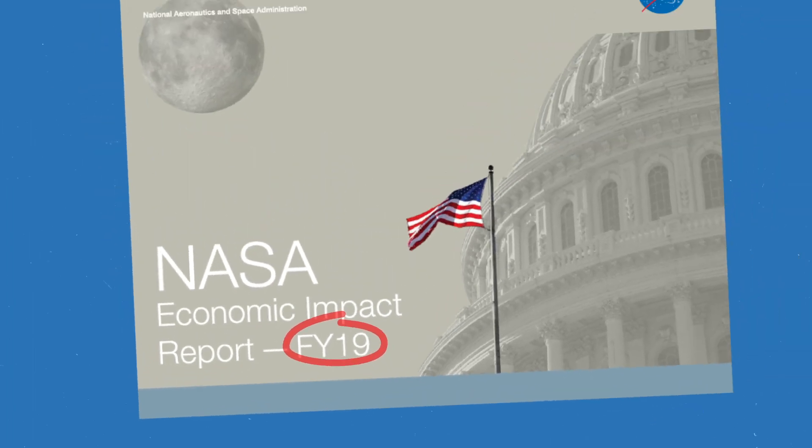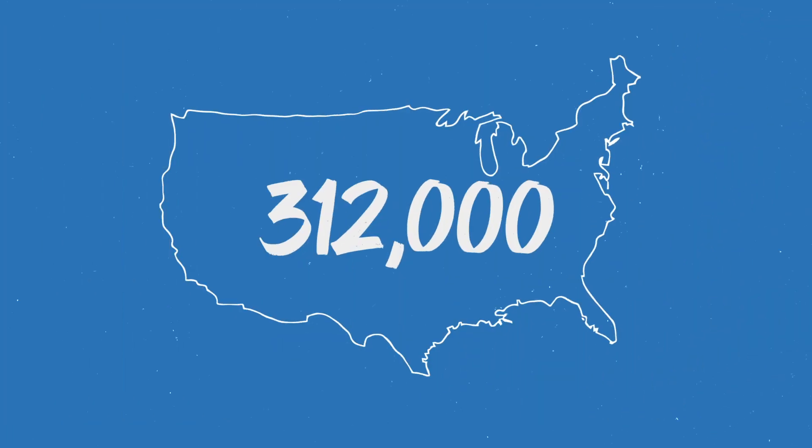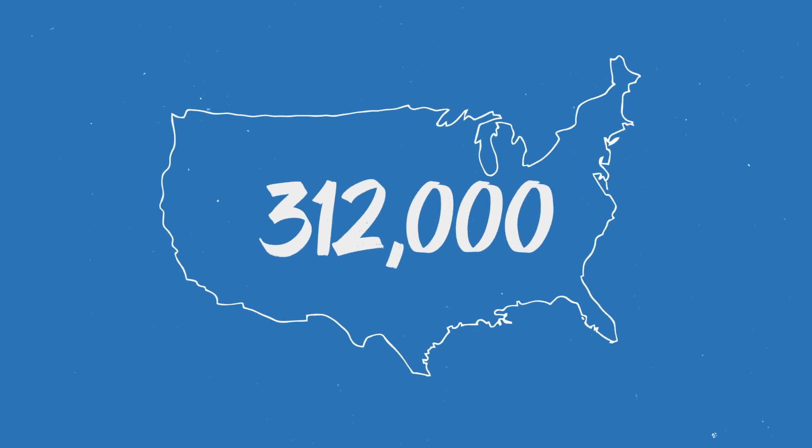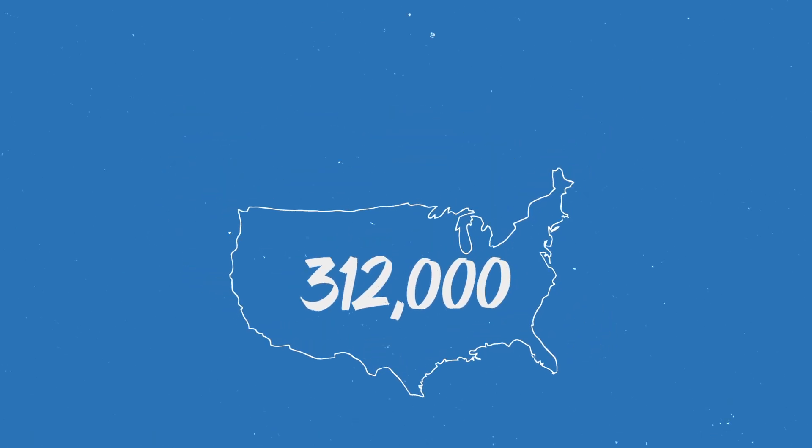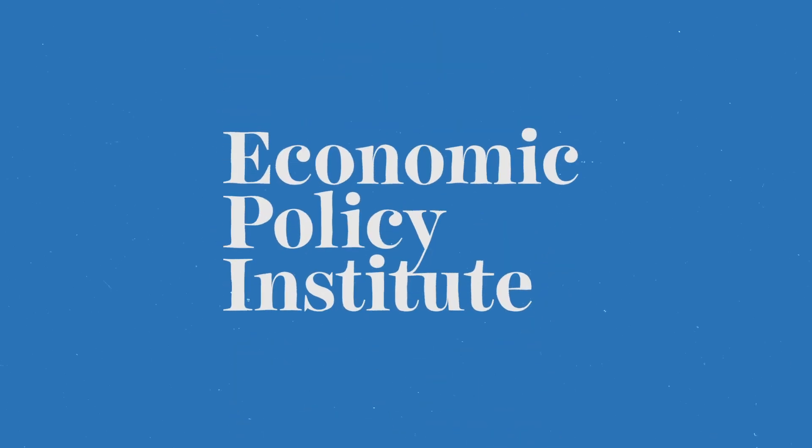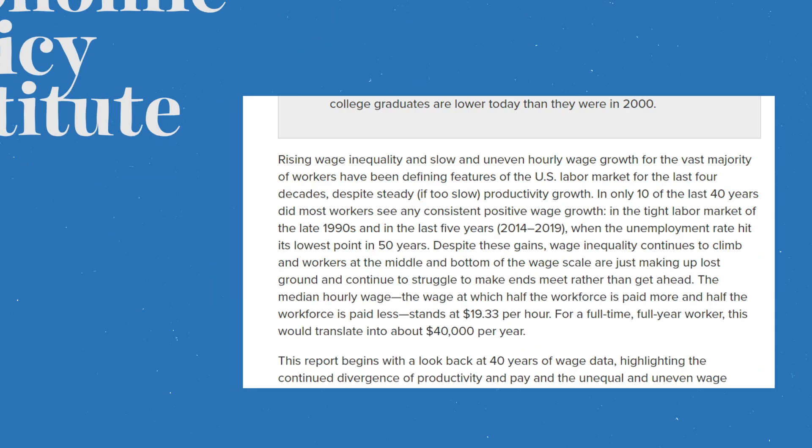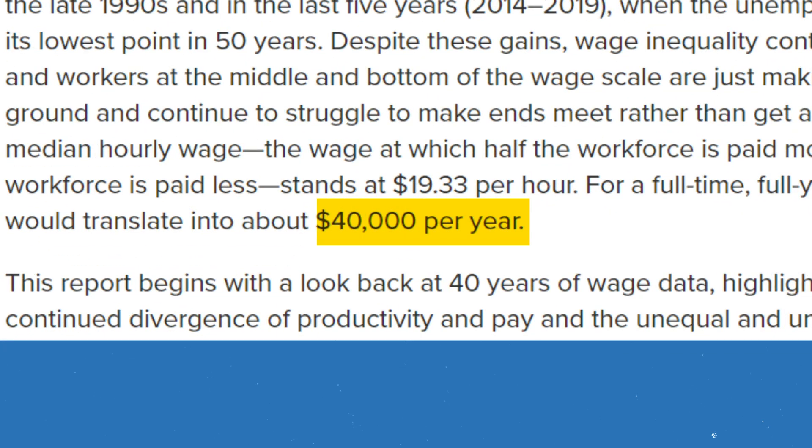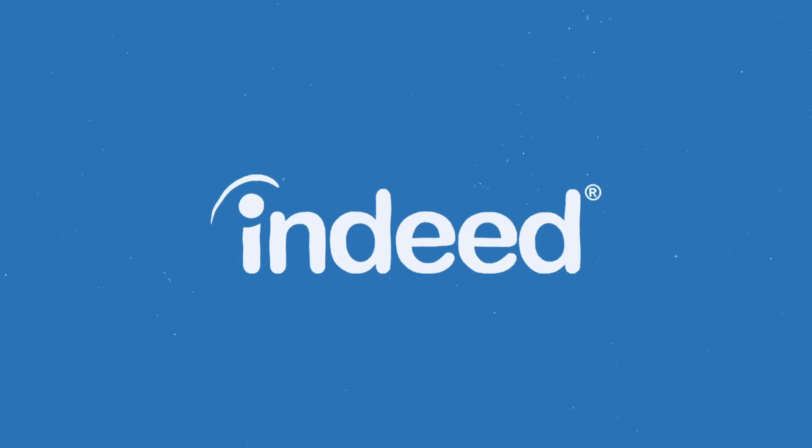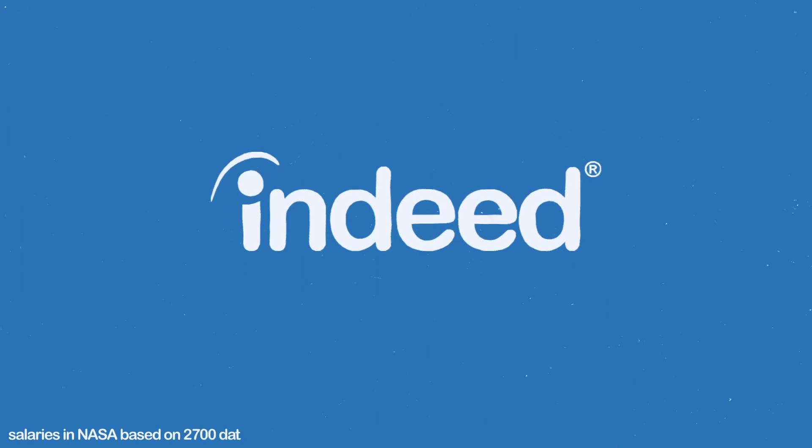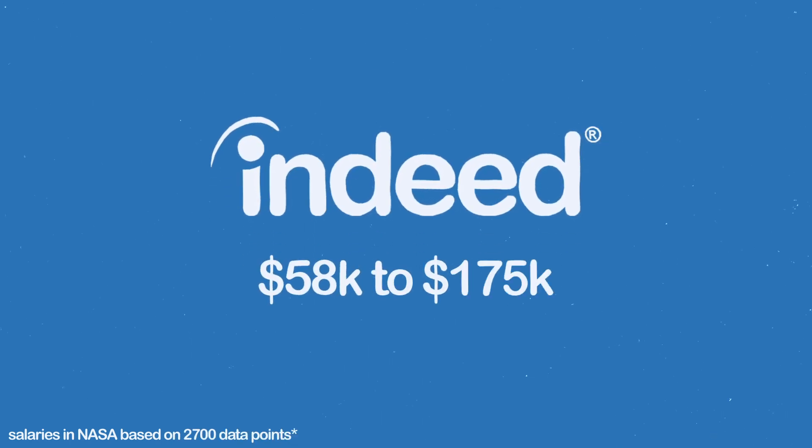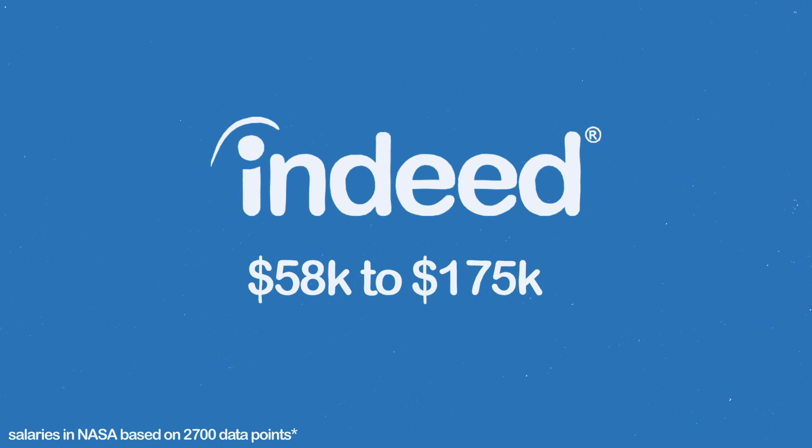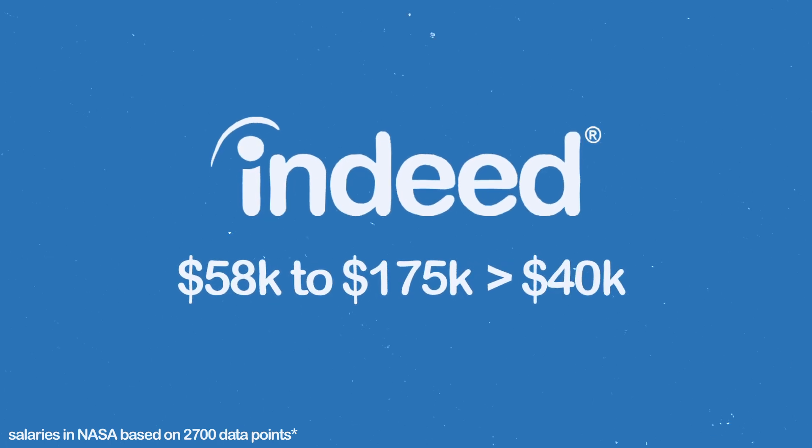And in summary, NASA supported more than 312,000 jobs in all 50 states, and by their nature, many of those are high paying jobs. According to the Economic Policy Institute, the average salary in the US is around 40,000 a year. And according to indeed.com, based on 2,700 data points, salaries in NASA range from 58 to 175,000 a year, well above the average salary in the US. Which brings us to the next point.